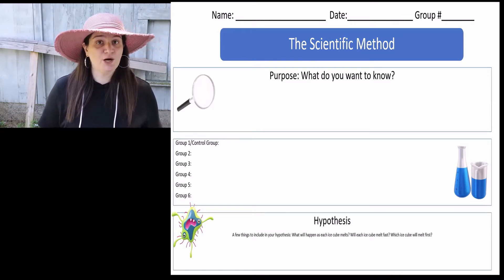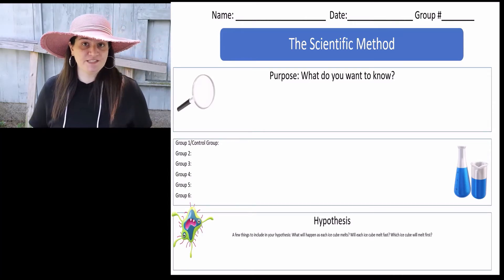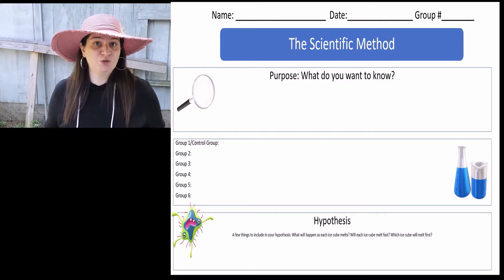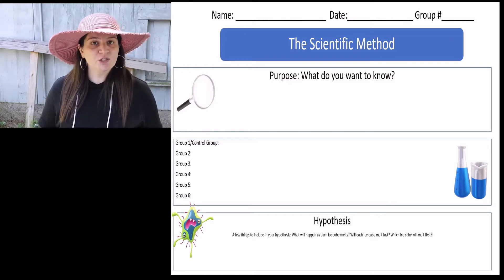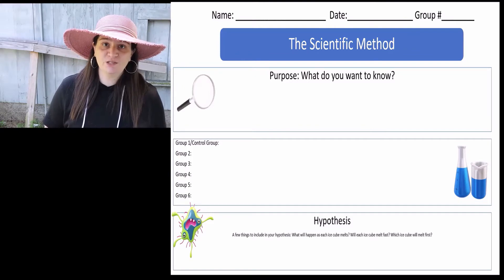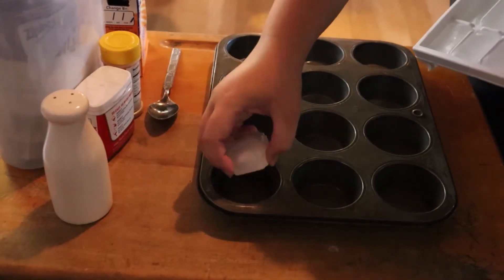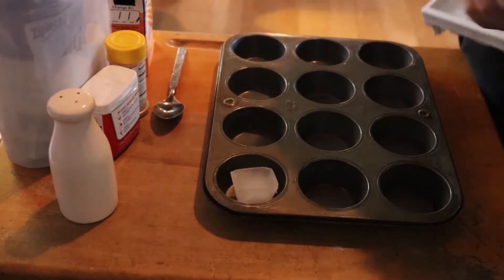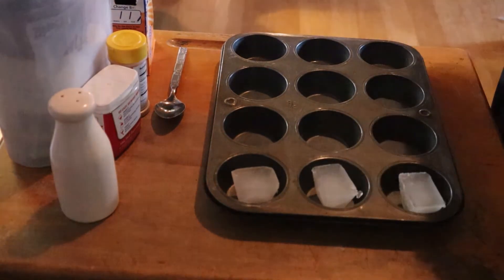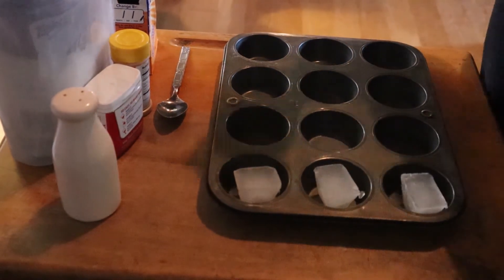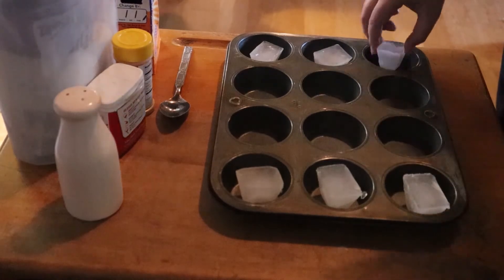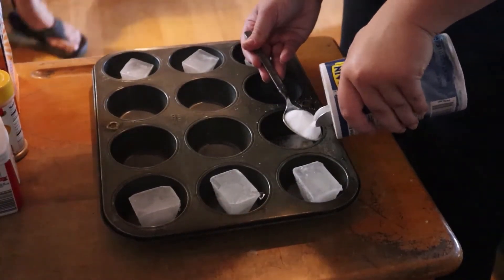Next they need to create their hypothesis. What do they think will happen as each ice cube melts? Do they think it's going to melt fast? Which one do they think is going to melt the fastest? Once their hypothesis is complete, they will begin the hands-on part of the experiment. Taking their six ice cubes, they place one in each container, and then they begin adding the substances.